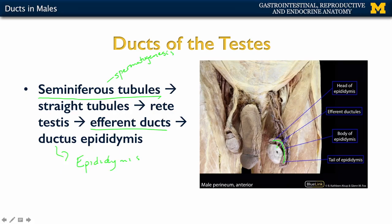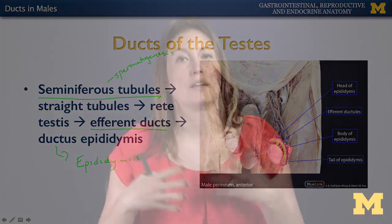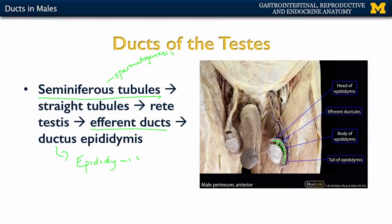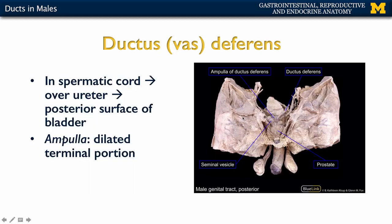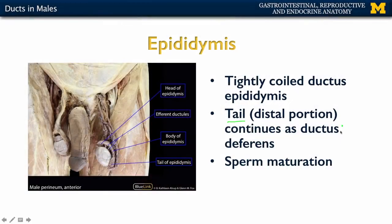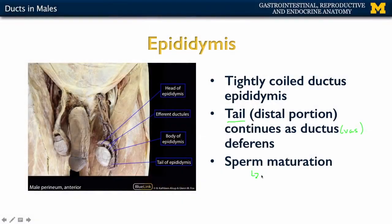You can see some of these small efferent ductules that appear external to the testes, coalescing into this comma-shaped epididymis. As you have this tube containing newly formed sperm, the epididymis continues as the tail, and once you reach the expanded distal portion, the name changes to the ductus deferens — sometimes referred to as the vas deferens. This region contains sperm, and sperm maturation can occur here.